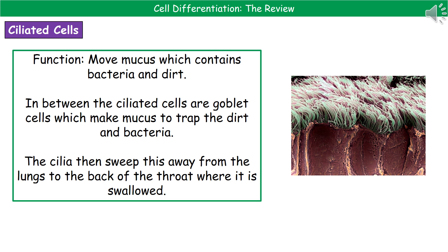Our fourth specialised cell are the ciliated cells, found within the airways. Their whole purpose is to move mucus — which contains bacteria and dirt — from where it sits in the airways. As you can see in the microscope picture, they've got little hair-like structures on top called cilia. Between them are goblet cells, which produce mucus that traps dirt and bacteria. The cilia make a wafting motion, sweeping the mucus up from the lungs to the back of the throat, where it can be swallowed and the stomach acid kills those bacteria.